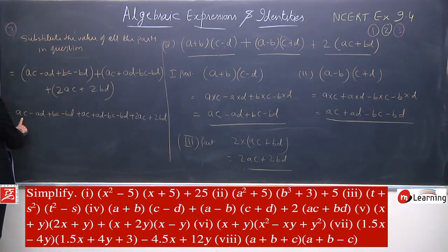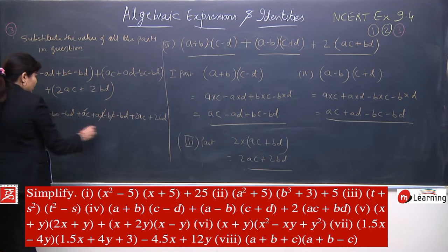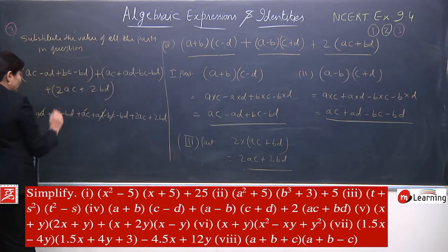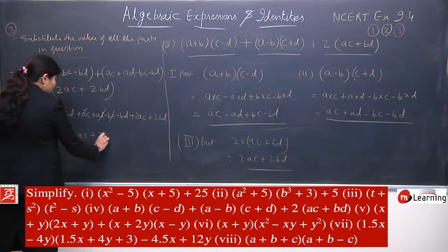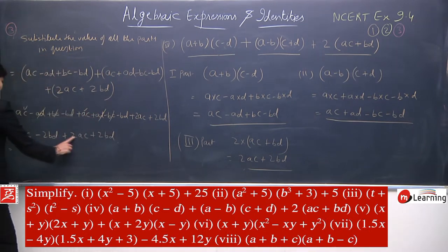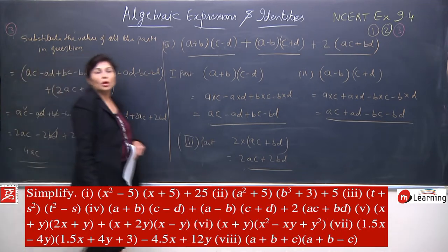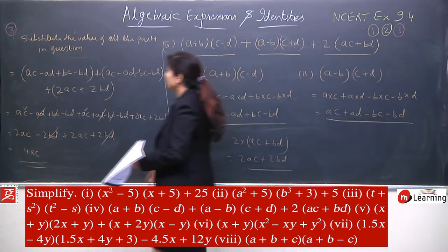Now you can see: ac and this ac will give you 2ac. Minus ad plus ad — what will happen? Cancel. bc and bc — they will also cancel because they have opposite signs. Now look at bd: minus bd and minus bd will give you minus twice bd. Now ac and ac — both are plus — it will give you 4ac. And bd and bd again cancel. So the big question solved down to a very small answer: 4ac.